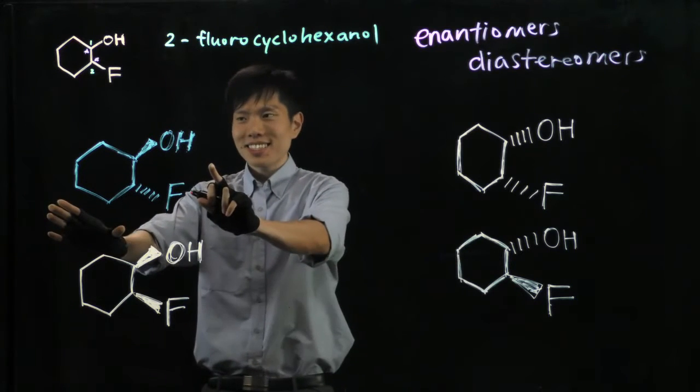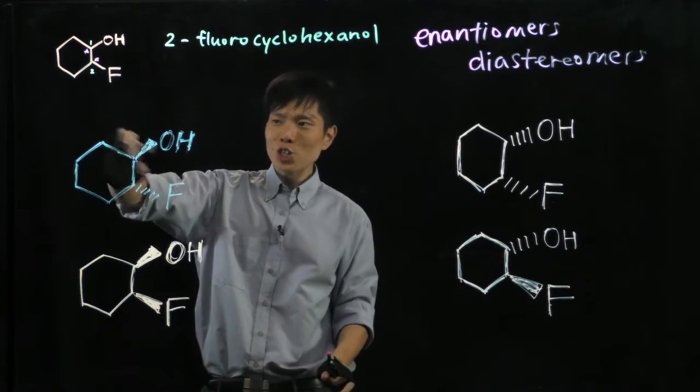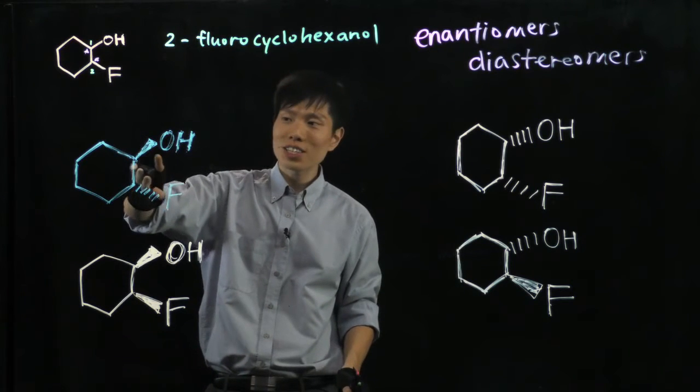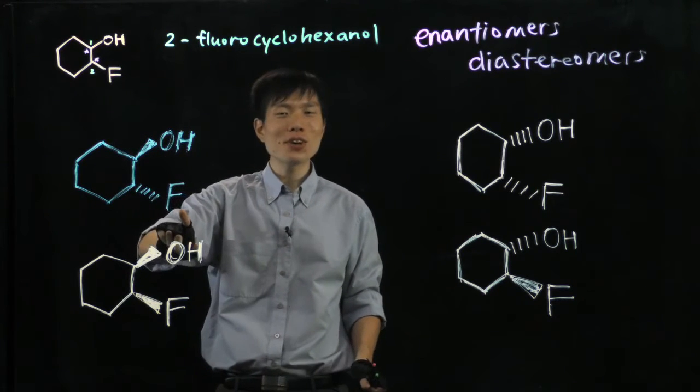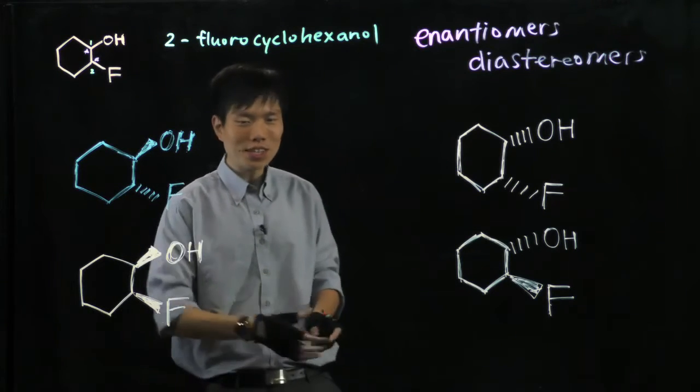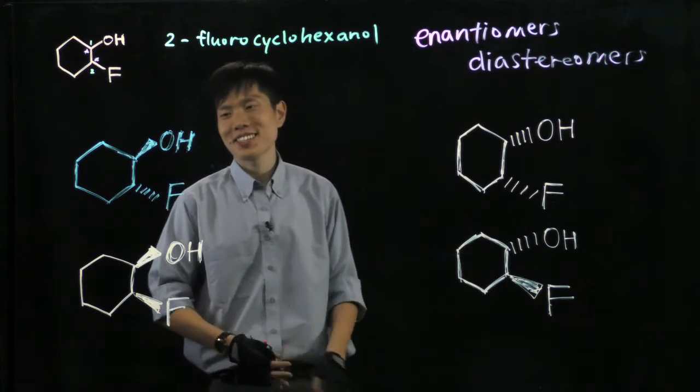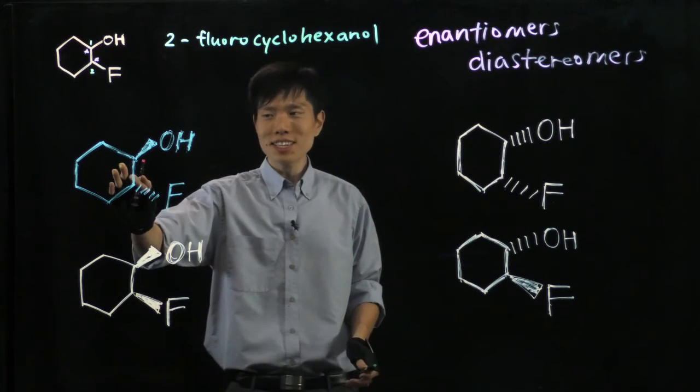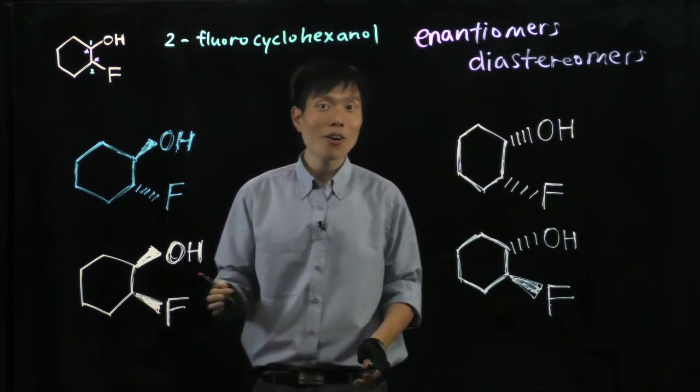But in this case, I give you the 3D structure assigning that OH has a wedge bond and the fluorine has a hash bond. Which means OH points to you, fluorine goes at the back of the plane. So now, let's consider this carbon, are they R or S?